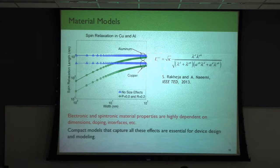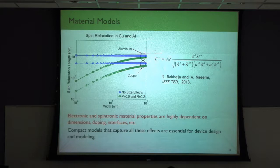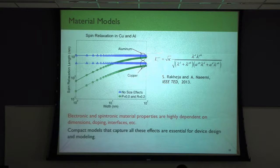At the material level, you need to be careful because material parameters highly depend on the dimensions, interfaces, impurities, and doping you're dealing with. Part of our work has been developing compact models for important parameters like spin diffusion length and spin relaxation length, calibrating these models with many experiments. For example, the spin diffusion length in bulk copper is around 500 to 600 nanometers, but you can't use that in a real circuit because at nanoscale, electrons get scattered at surfaces and grain boundaries. This model captures size effects and gives you the spin relaxation length accounting for those nanoscale phenomena.